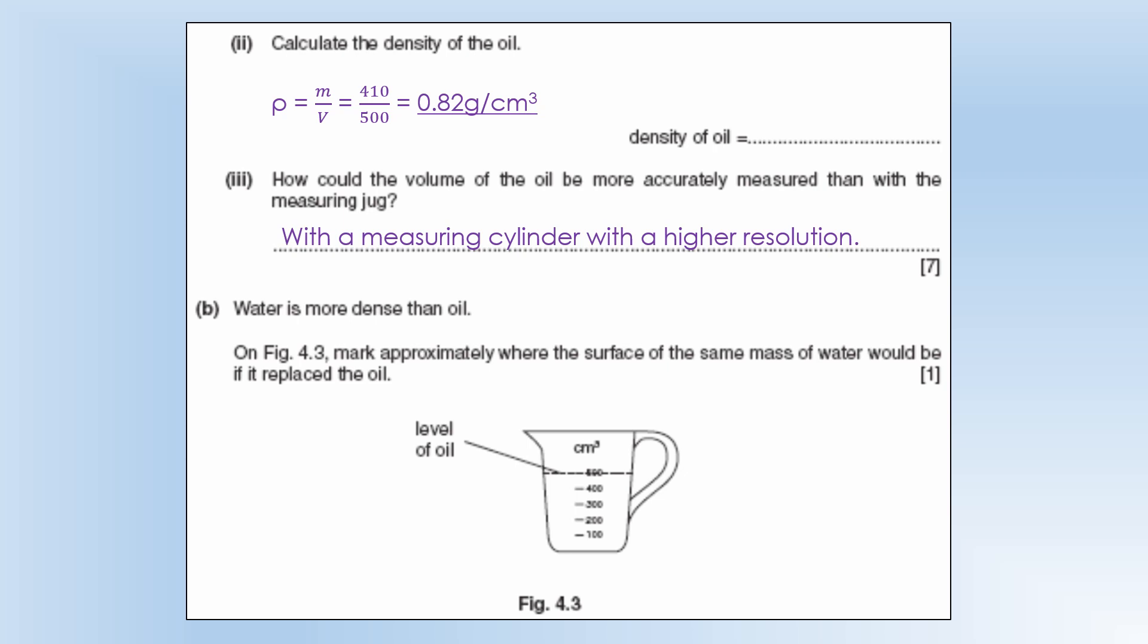Water is more dense than oil. Mark approximately where the surface of the same mass of water would be if it were replaced by oil. So the thought process I went through here is if water is more dense the same mass would occupy a smaller volume and that's how I would mark this position here to give us the answer to this question.